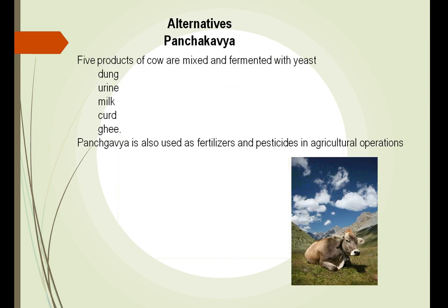Another method, used in India, is called panchakava. They mix five products of the cow: dung, manure, urine, milk, and ghee. They mix all these things together, let it ferment, and use it as both a fertilizer and a pesticide.